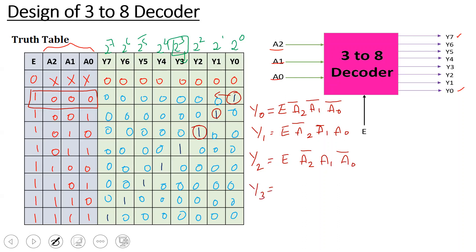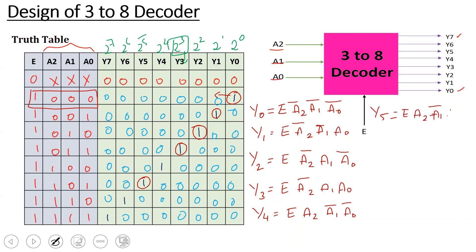For Y3, the input combination is E=1, A2=0, A1=1, A0=1. So Y3 = E · A2_bar · A1 · A0. For Y4, the combination is E=1, A2=1, A1=0, A0=0. So Y4 = E · A2 · A1_bar · A0_bar. For Y5, the combination is E=1, A2=1, A1=0, A0=1. So Y5 = E · A2 · A1_bar · A0.